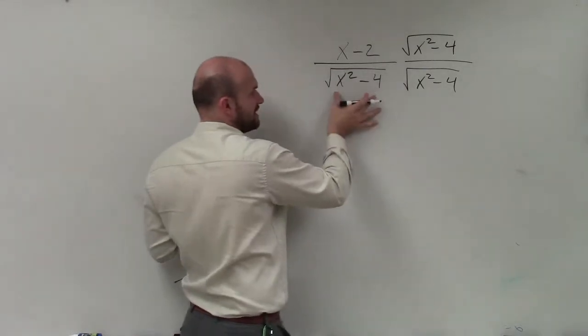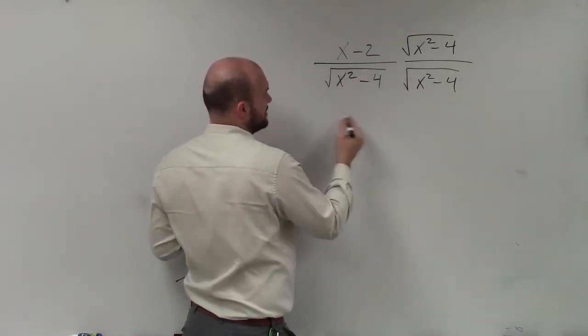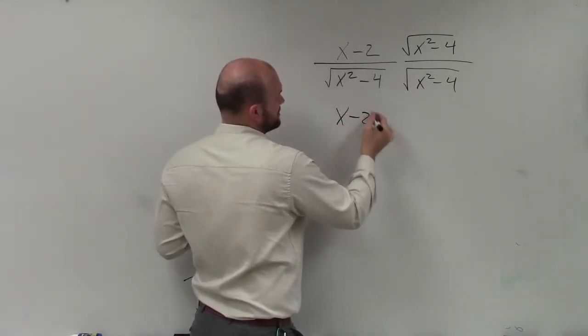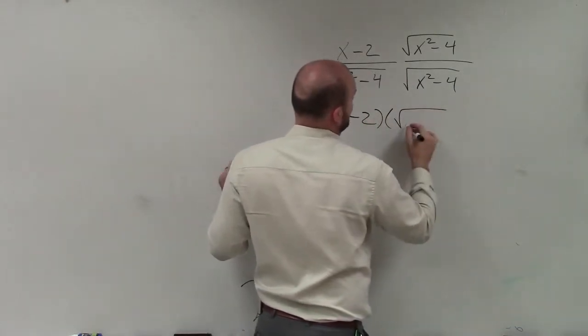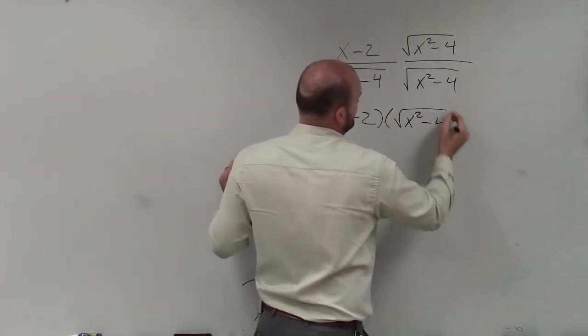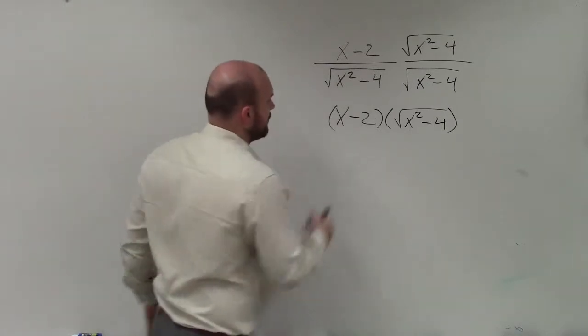Now what's nice about, again, by multiplying by x squared minus 4 here is now in my numerator that goes unchanged. I can't multiply an expression to another expression inside the radicand. However,